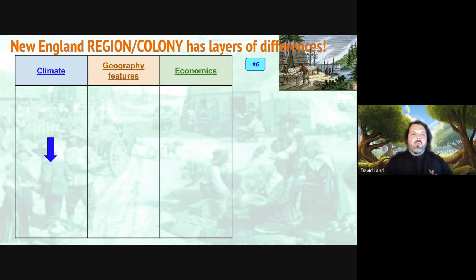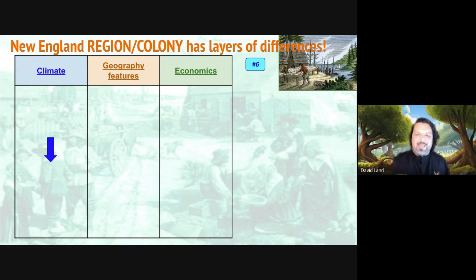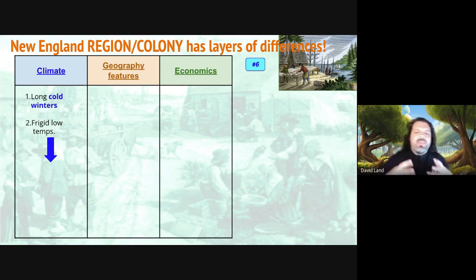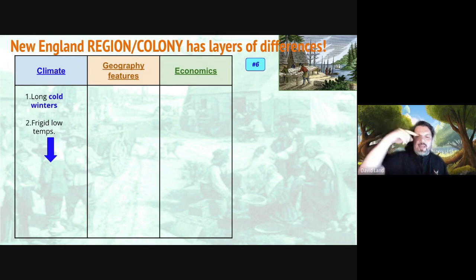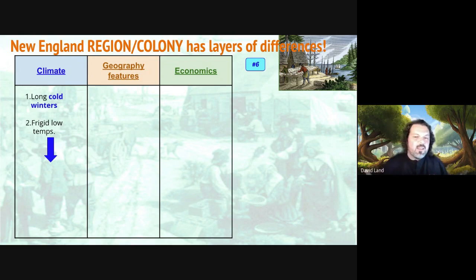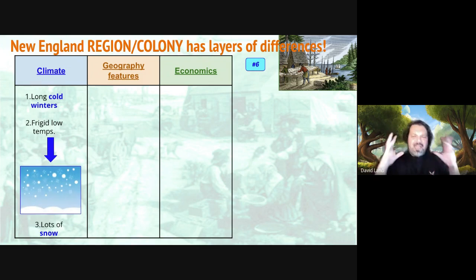Now let's add to our charts — climate, geography, and economics. Starting with climate: because New England is so far north, it's going to be cold and frigid. Because of those cold winters, can you predict what we're going to see outside the window during winter season? If you thought snow, you were correct. There's going to be lots of snow on the ground because it's so cold here.